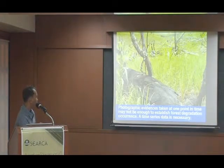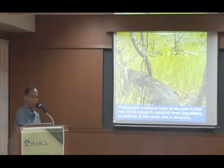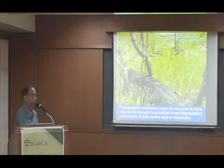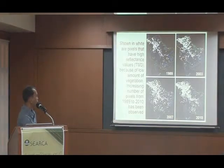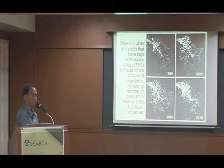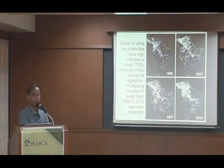We see divergent drivers of forest degradation in some areas, as natural re-establishment of forests also occurs due to long fallow and abandonment of farms in areas no longer suitable for farming. Photographic evidence of forest degradation taken at one point in time may not be enough to establish degradation in the context of REDD. Time series data is necessary. Using histogram-matched Landsat imagery, we can see that the quantity of white pixels representing low vegetation has increased from 1989 to 2010 — a clear indication of forest degradation.